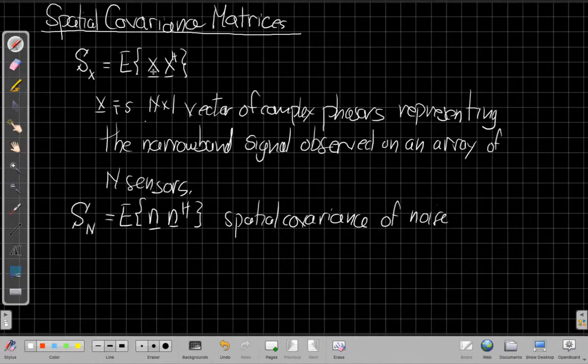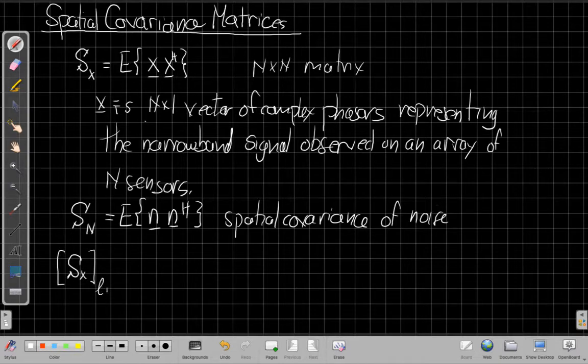But if we break this down, if this is a column vector, this will give us an outer product. So I have an N by N matrix I'm taking the expected value of. If I went and looked and said, well, let me look at S_X and I pull out, say, the Lth row and the Mth column, what I'm saying then, when I look at this